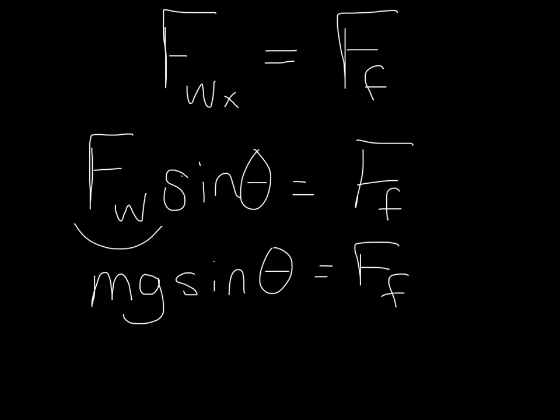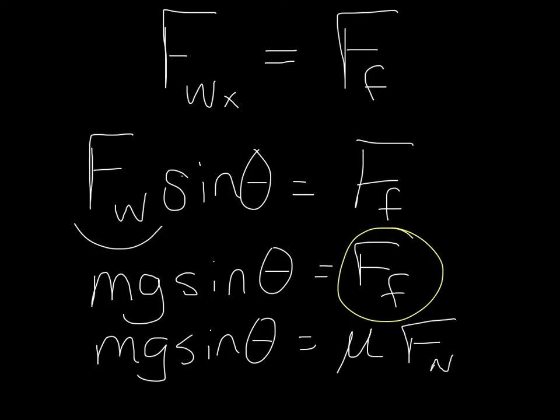Now it's time to remember that any time that we see a friction force, friction force can be rewritten in terms of the normal force and the coefficient of friction. So mg sine theta equals mu times Fn, and I'm leaving off the subscript right now, but we could say that that is mu static if the box isn't moving anywhere.